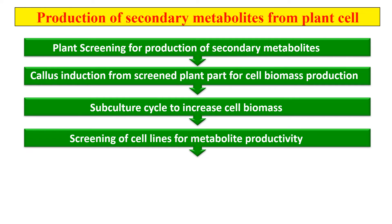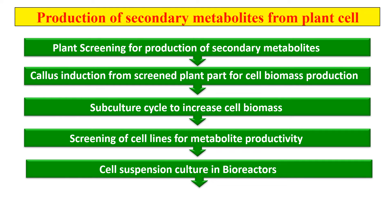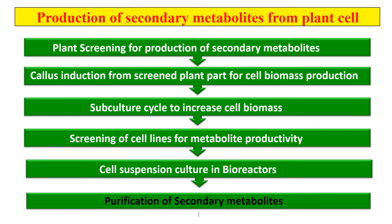After subculturing, we screen out the specific cells which are secreting that metabolite, or which are secreting it in high amounts. So the next step is the screening of cell lines for metabolite productivity. After screening, these cell lines which are producing that metabolite efficiently are now cultured in cell suspension culture in a large bioreactor. Bioreactors are instruments used to carry out biological reactions — here we carry out the reaction for the production of secondary metabolites. The screened cell lines are placed in cell suspension culture in bioreactors.